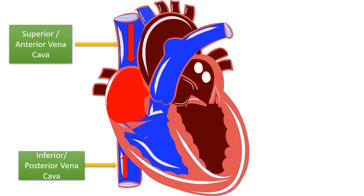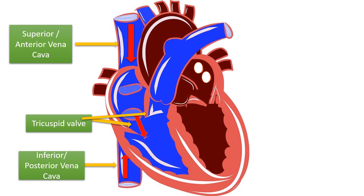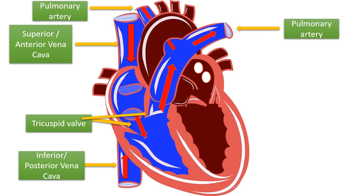Between the right atrium and right ventricle there is a valve called the tricuspid valve, which acts like a door. As the atria contract, the valve opens and blood travels from the right atrium to the right ventricle. From the right ventricle, the deoxygenated blood enters a blood vessel called the pulmonary artery, and from the pulmonary artery the blood enters the lungs for purification.